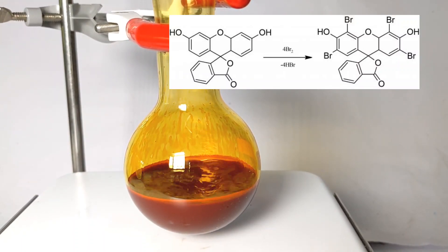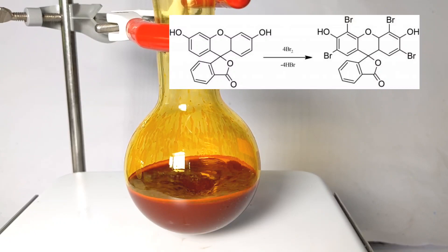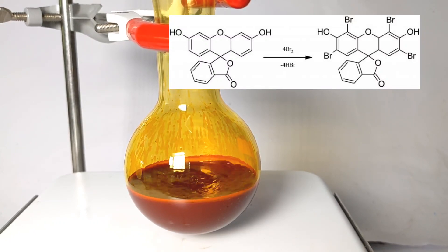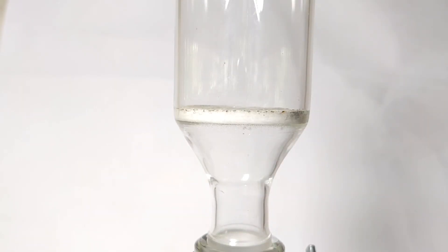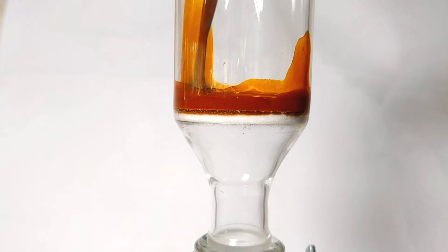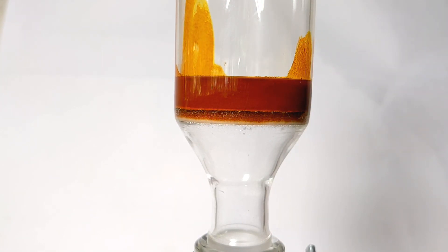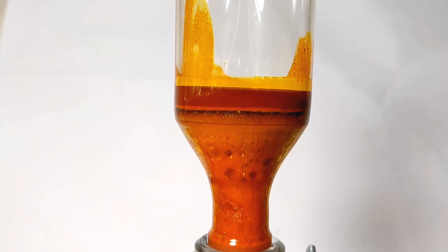Now we filter the mixture to collect the crude product. I use the sintered glass filter here with vacuum assistance, but as you can see, a lot of bromine is remaining in the product.